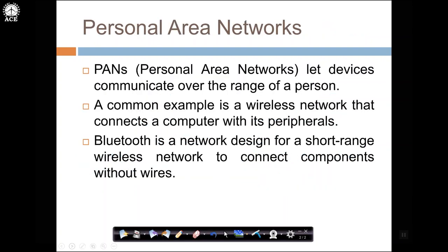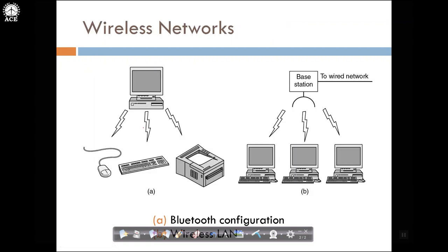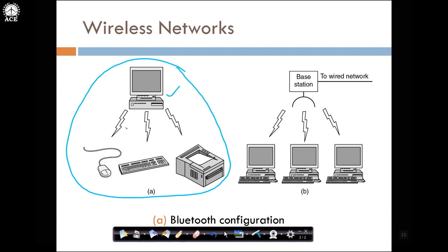A personal area network allows devices to communicate over the range of a person. A common example is a wireless network connecting a computer with its peripherals. If I have a PC or laptop with a wireless keyboard, mouse, and other peripherals connected, that is a personal area network. Bluetooth is a network designed for short-range wireless communication to connect components without wire. A base station connected to the wired network can link nearby machines through wireless radio links — that is also an example of wireless networks.